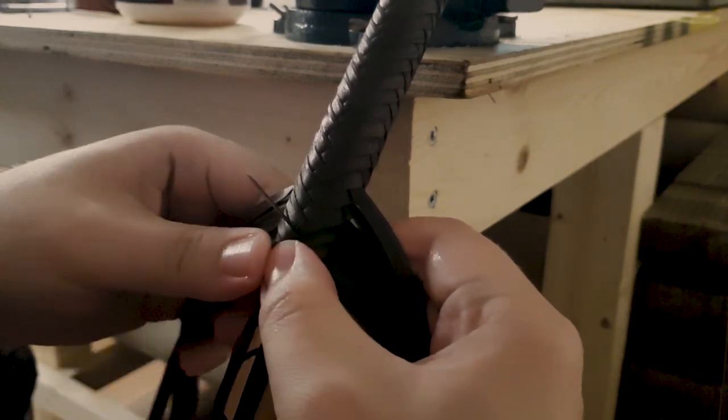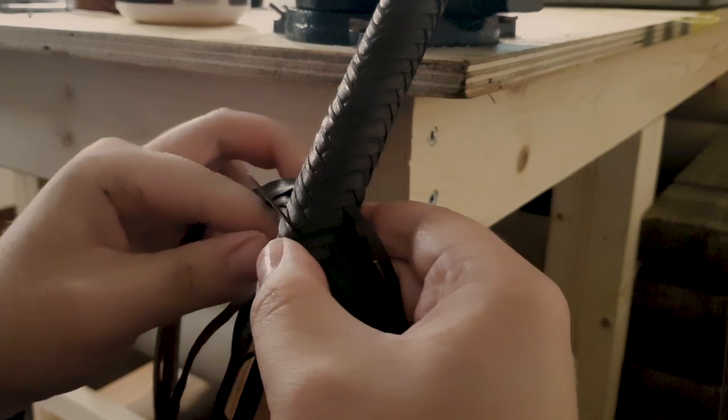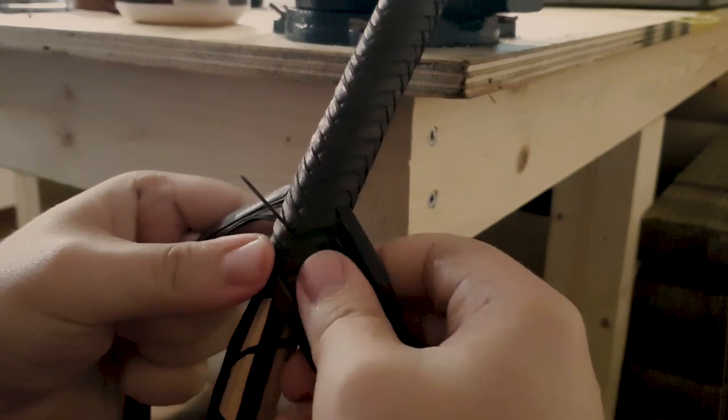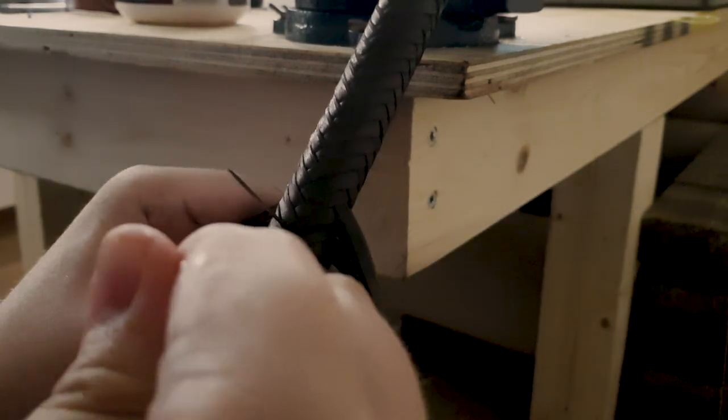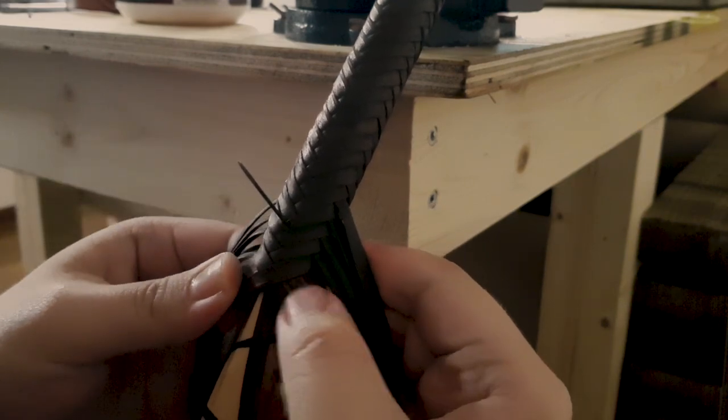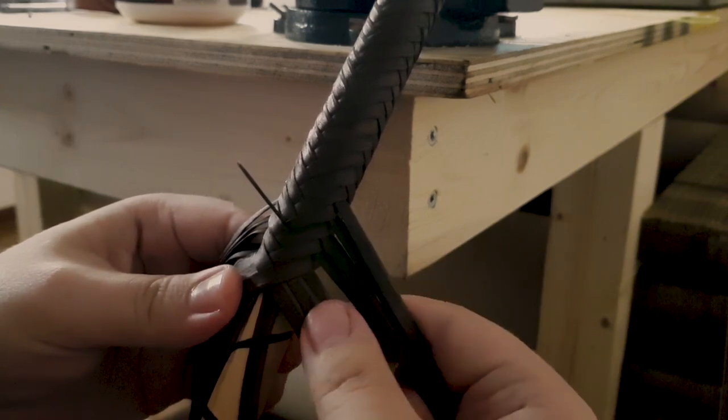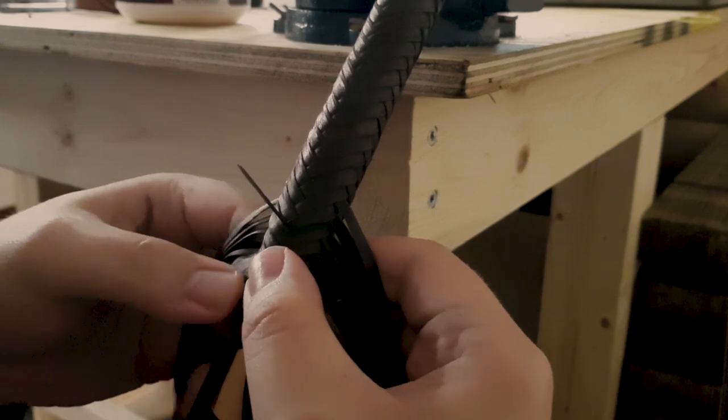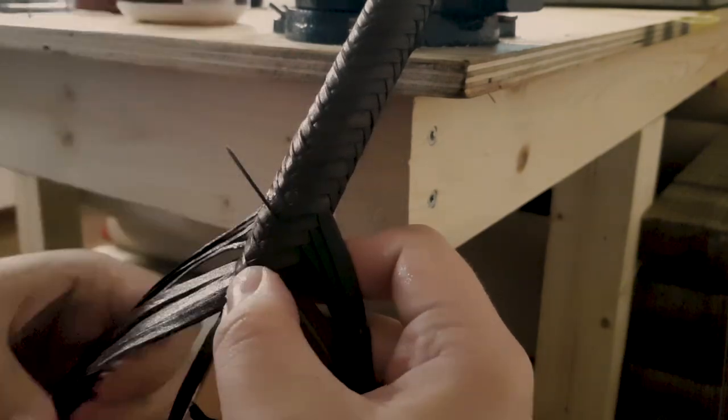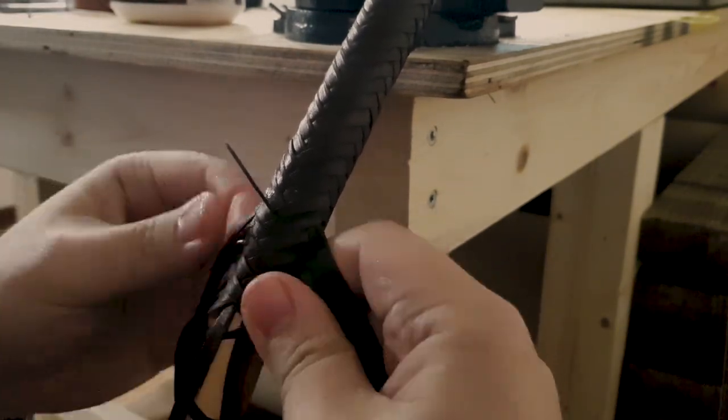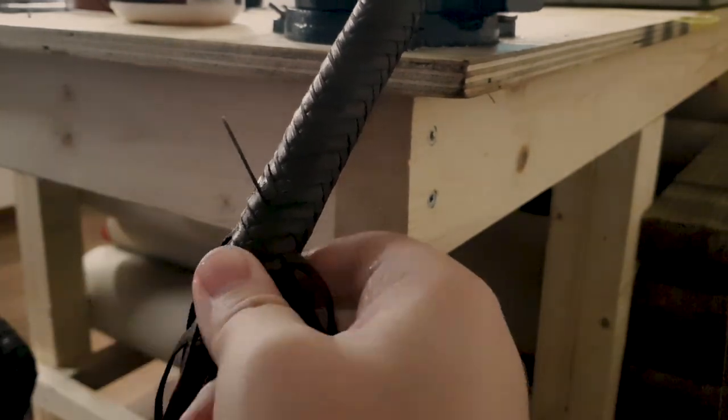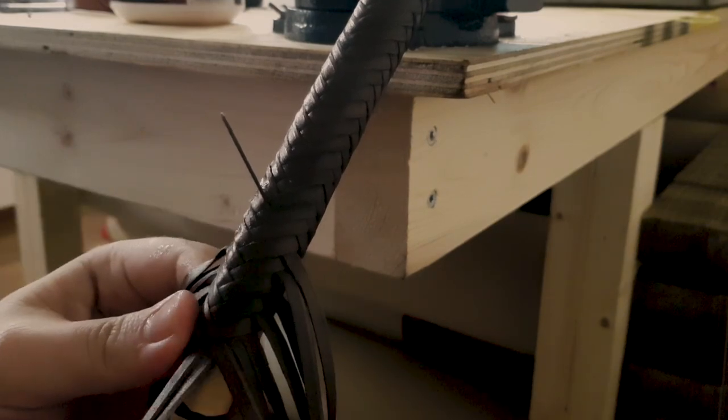Of course it helps to be a bit careful when doing this, or a bit gentle I should say. And what we have done now is move from under 4 over 4 into under 4 and over 3, because these two strands disappeared into the core.